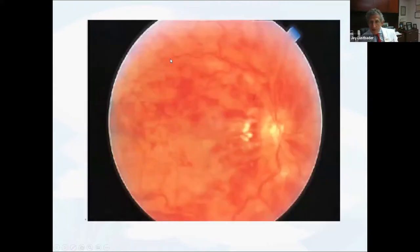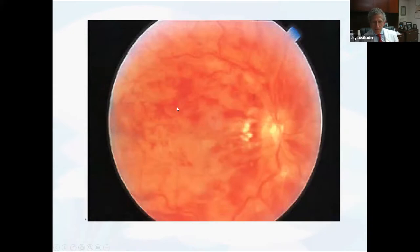You can also get an obstruction in the central retinal vein, and that produces a very different appearance where you get diffuse hemorrhaging throughout the retina — the so-called pizza pie appearance — which is very classic for a central retinal vein occlusion.